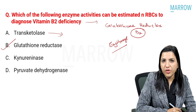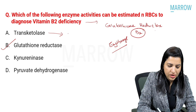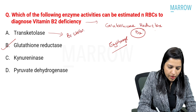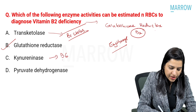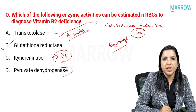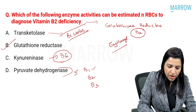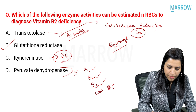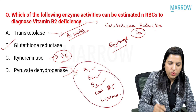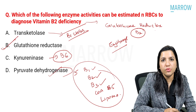Many of you have confused it with transketolase — but erythrocyte transketolase activity is an indicator of B1 status, not B2. Kynureninase is an enzyme that requires B6; it's a PLP-requiring enzyme. Pyruvate dehydrogenase is a multi-enzyme complex with five coenzymes: B1 (thiamine), B2 (riboflavin), B3 (niacin as NAD+), B5 (as coenzyme A), and lipoamide. That will not specifically identify B2 deficiency, so it is not the answer. The answer is glutathione reductase.